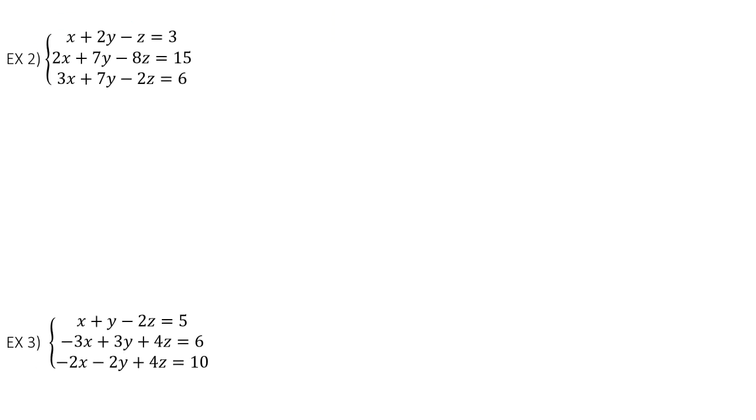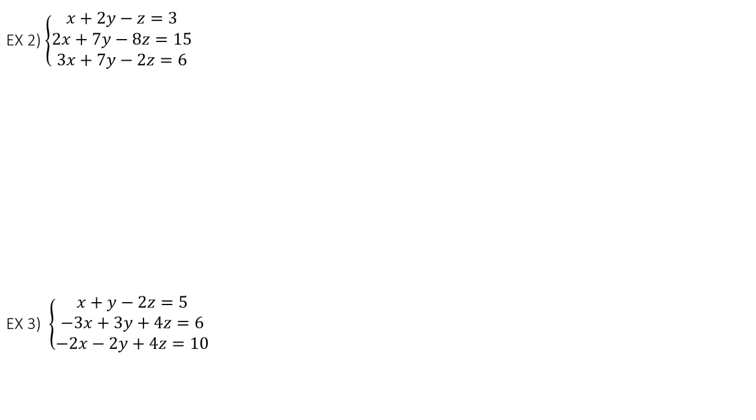Alright, let's look at a 3 by 3 then. So first things first, let's go ahead and put this into an augmented matrix. So 1, 2, negative 1, 3, 2, 7, negative 8, 15, 3, 7, negative 2, 6.